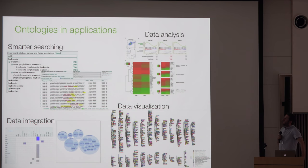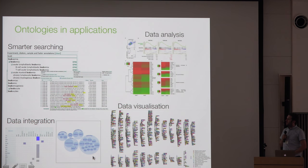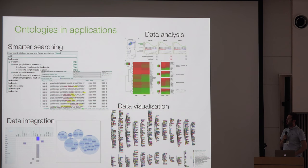The good news is that with all this ontology annotation you can start to see real value. We now have applications that do smarter searching through query expansion driven by the ontology, obviously data analysis including classic things like gene enrichment, and a whole bunch of data integration applications. Things like the Gene Expression Atlas and CTTV are examples where we pull in lots of data and all that integration is done through the ontology annotation.